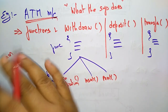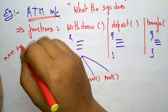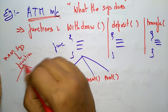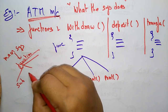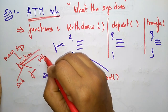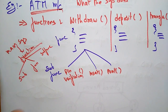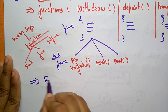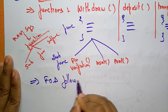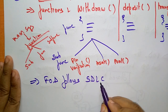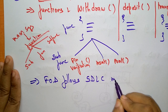So this is how function oriented design works — the main system is divided into functions, and again these functions are divided into sub functions. The function oriented design follows the SDLC method — software development life cycle methodology.